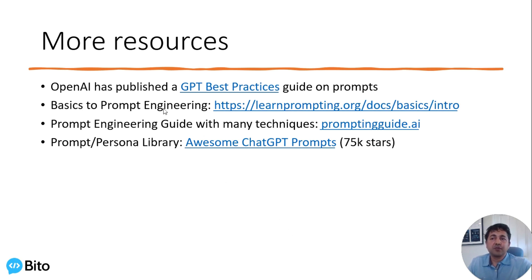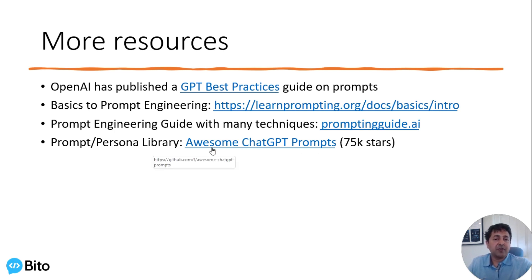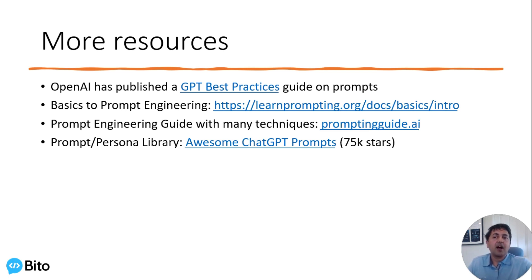A few more resources: a PDF is available so you can quickly access these tips. OpenAI has published a GPT best practices guide, and there are a few others. The Awesome ChatGPT Prompts repo is a persona library with 75,000 stars on GitHub, and it provides over 100 prompts ranging from developer prompts to being a travel agent or a poet. You might find this useful in many different ways.